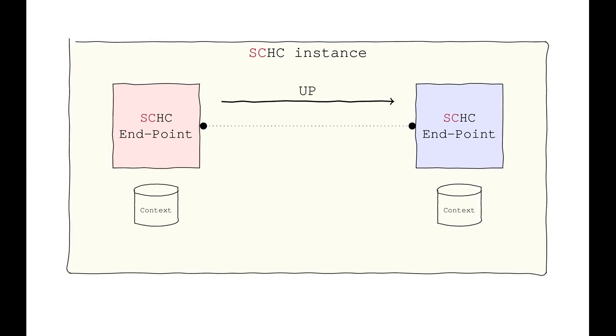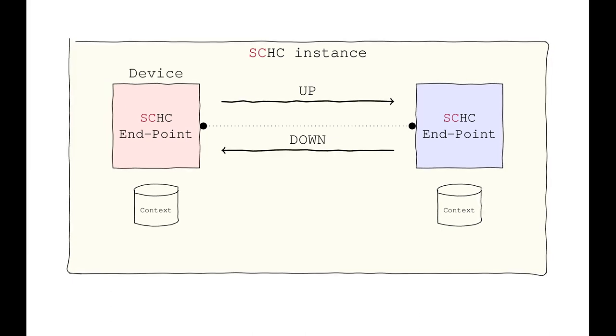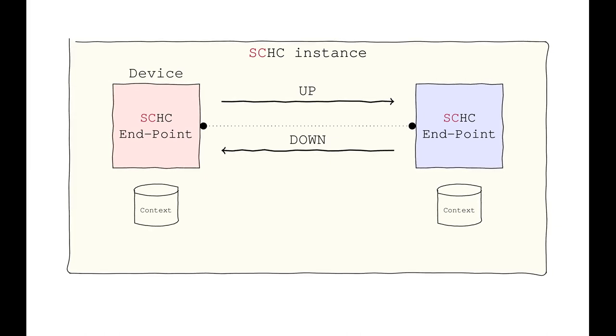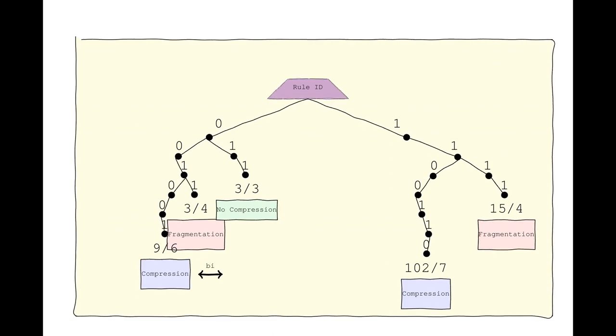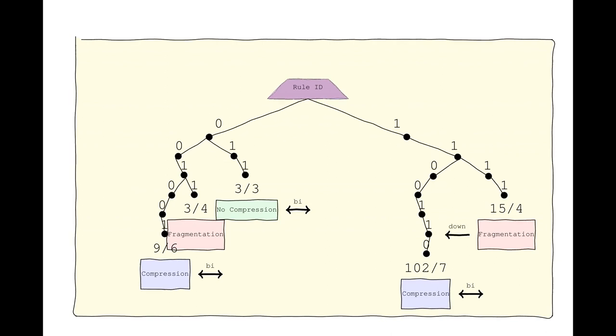It is straightforward to identify the direction of traffic flow. By convention, the device or constrained object is placed on the left side. We have uplink traffic originating from the device and downlink traffic toward the device. The rules take these traffic directions into account. Compression rules are designed to work bidirectionally, operating in both uplink and downlink directions.